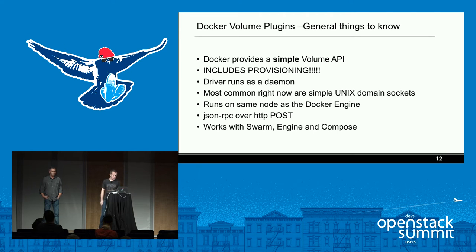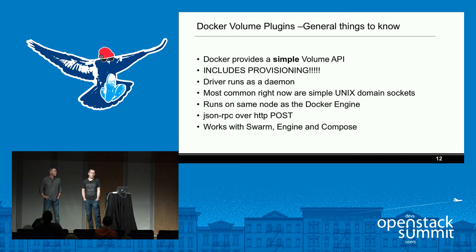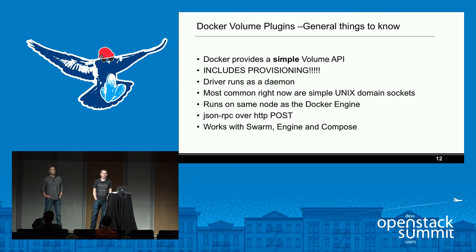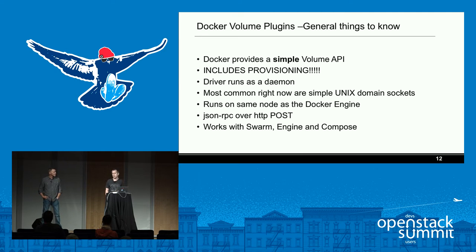The Docker volume plugin has a simple volume API — basically create, delete, attach, detach, and list. It does include provisioning, so when you say create, it goes to the backend — in this case Cinder. It runs as a daemon that needs to run everywhere you want to consume services. If you have Docker Engine on 300 hosts, you run the daemon on 300 hosts. It uses a Unix domain socket, JSON-RPC, and works with Swarm, Engine, Compose, and other Docker consumers.